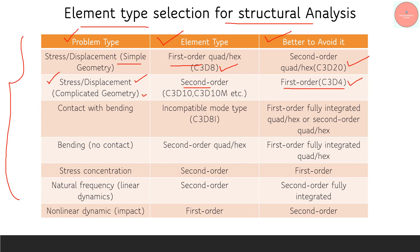For contact with bending simulations, use incompatible mode elements — C3D8I or C3D10I type — but you can also use first-order fully integrated quad or hex, or second-order quad or hex. For bending with no contact — a single component with no contact — use second-order quad or hex directly for simple geometry, and avoid first-order fully integrated quad and hex. This choice is also influenced by time consumption in the analysis.